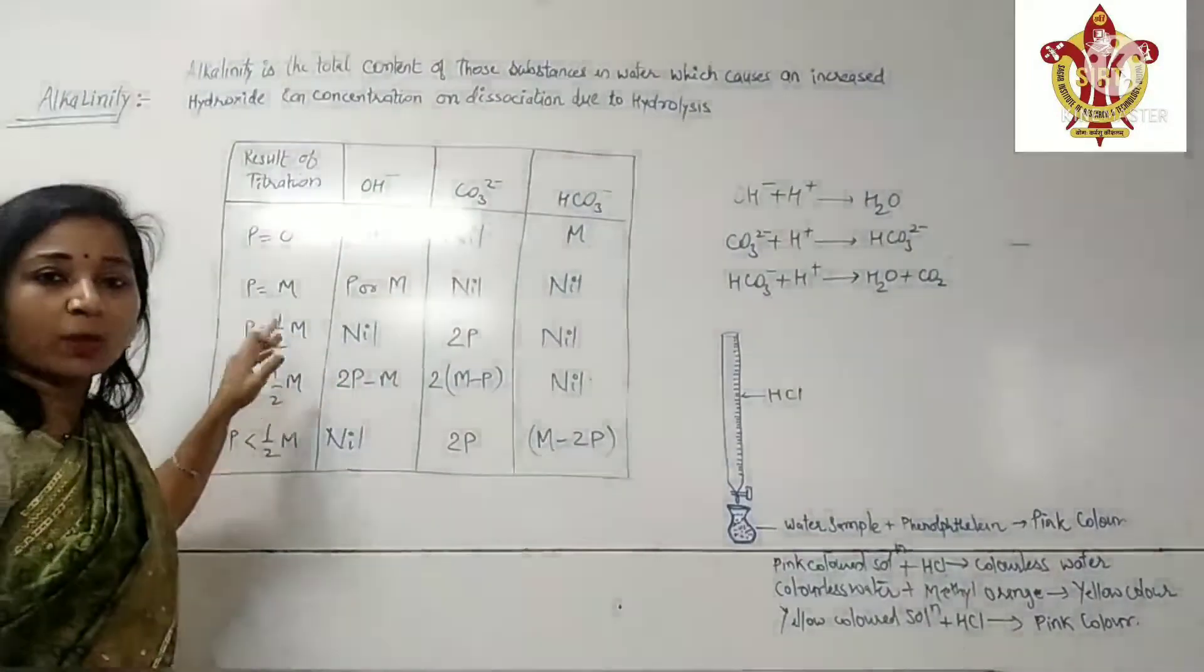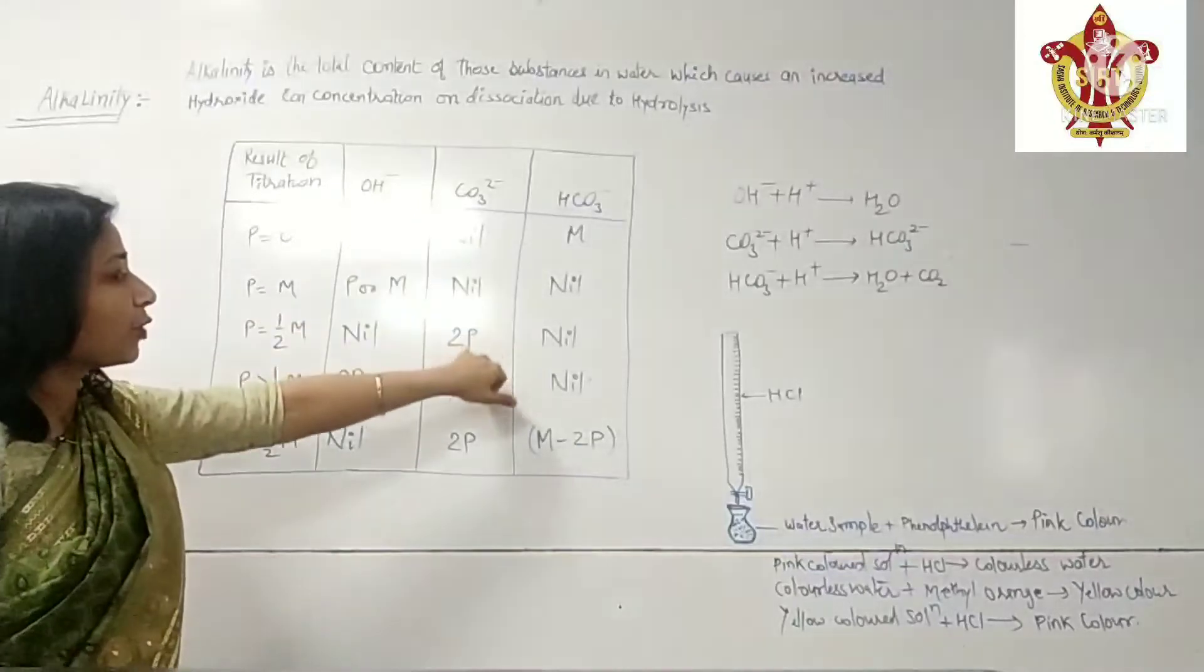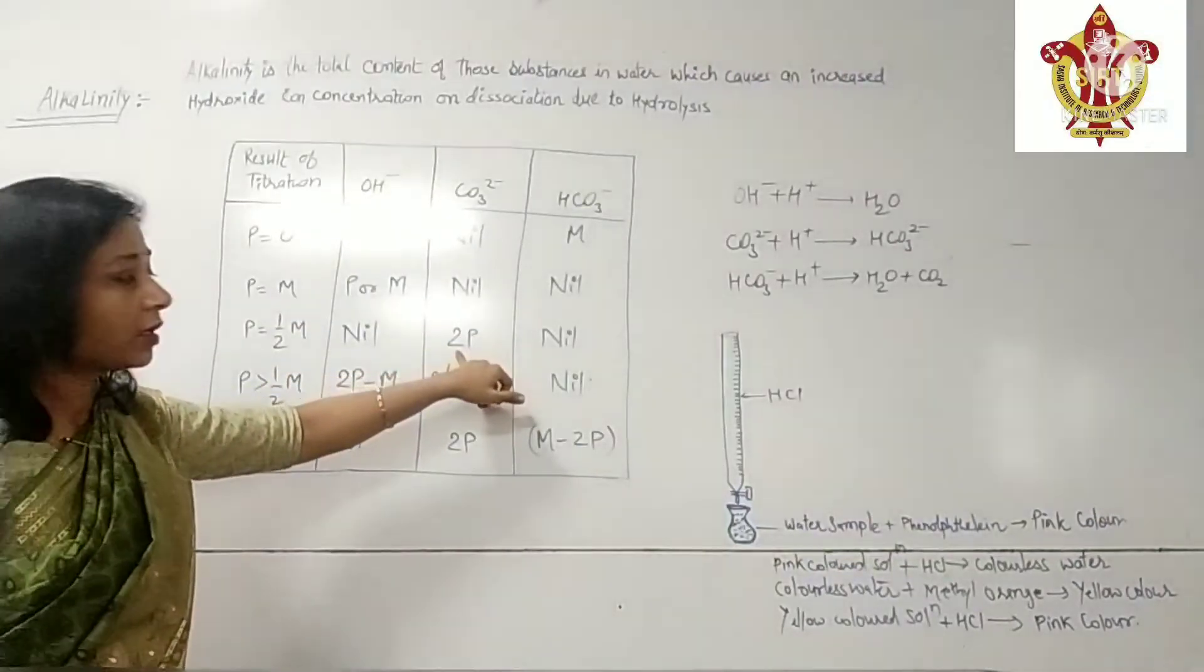When P is equal to half M, jab P ki value half M ke barabar ho, tab carbonate ion present hoga and uski value hogi 2P. Hydroxide and bicarbonate are absent.